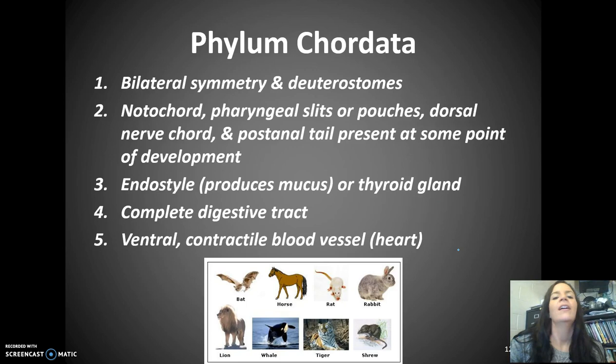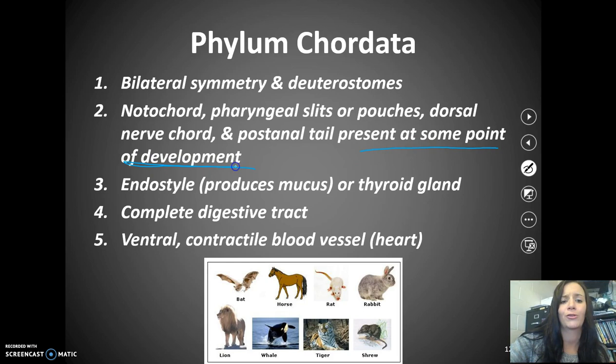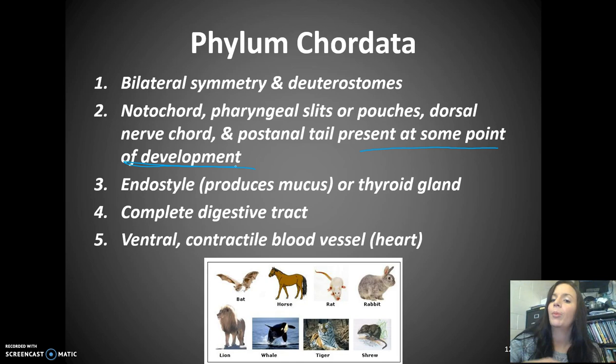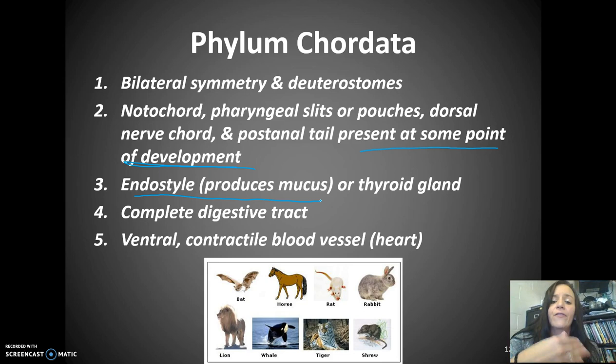Finally, phylum Chordata. There are five characteristics: bilateral symmetry as deuterostomes, the notochord, pharyngeal slits or pouches, dorsal nerve cord, and a post-anal tail present at some point of development — because while we are chordates, gill slits and a tail appear earlier in our development. They also have an endostyle, which produces mucus or a thyroid gland. They have a complete digestive tract and a ventral contractile blood vessel — also known as the heart.